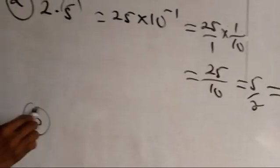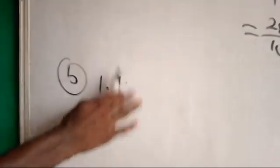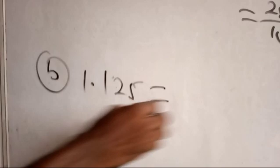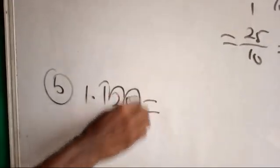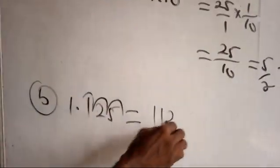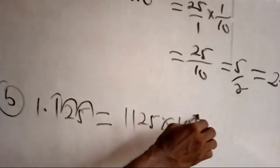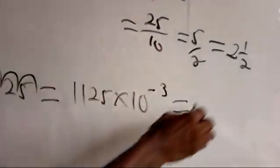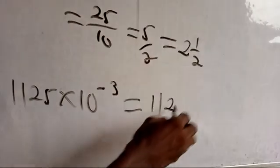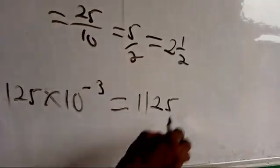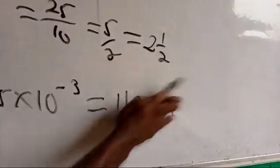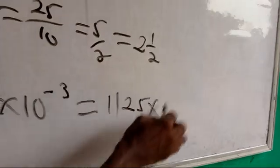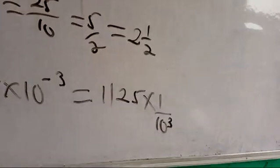Let us do question B: 1.125. Now let us see, we move this one three times, three times become 1.125 times 10 raised to minus 3, then doing this becomes 1125 times 10 raised to minus 3.